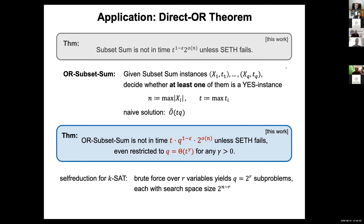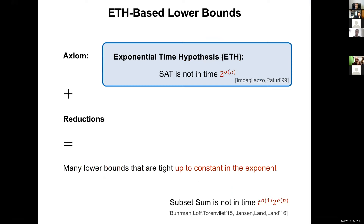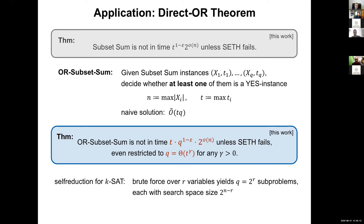For k-SAT, we have this kind of self-reduction: partition over r variables to get 2^r subproblems, each with a smaller search space of size 2^{n−r}. If you could solve all of these subproblems faster than the number of subproblems times the search space size, you would refute the Strong Exponential Time Hypothesis. So just from the hardness of satisfiability and the self-reduction, we get that solving many such instances in the Or fashion is hard.